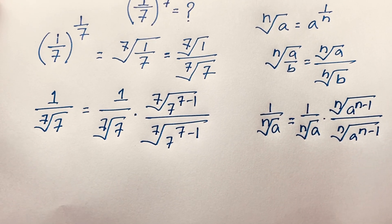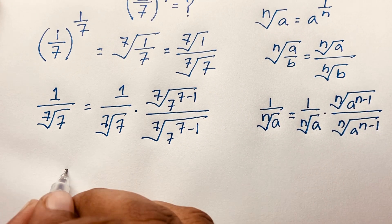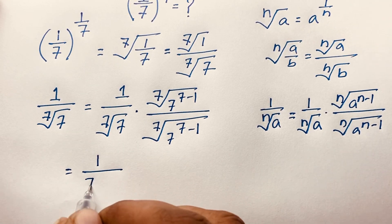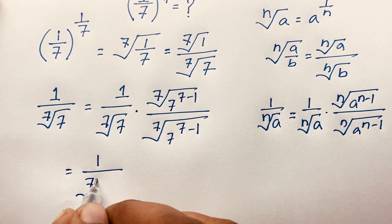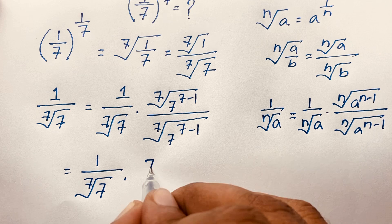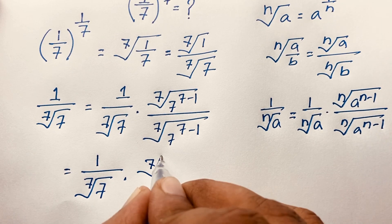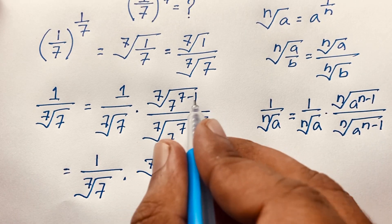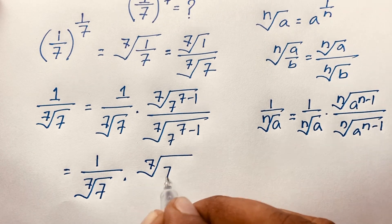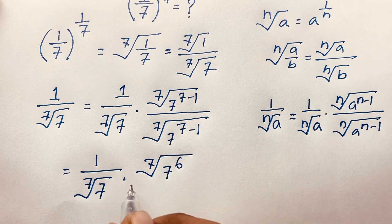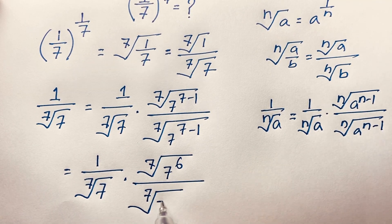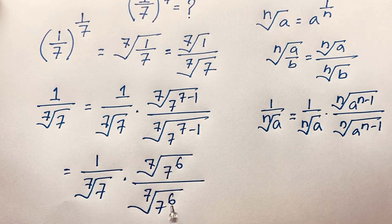Now, this expression becomes 1 over 7th root of 7, times 7th root of 7 to the power 6 — since 7 minus 1 equals 6 — over 7th root of 7 to the power 6.